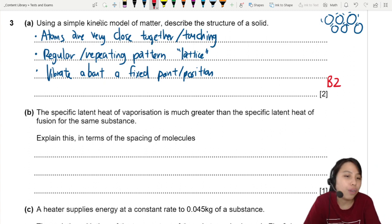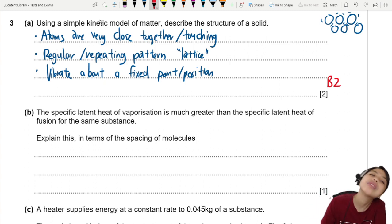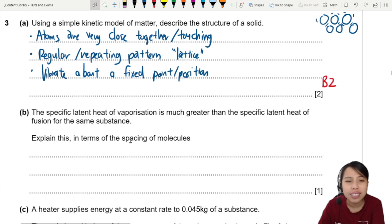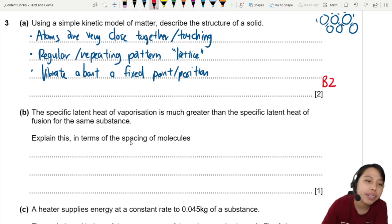The specific latent heat of vaporization is greater than the specific latent heat of fusion for the same substance. Explain this in terms of spacing of molecules. A lot of people mention the spacing of gas versus spacing of liquid. But hang on, what are we comparing here?